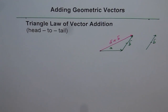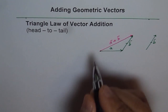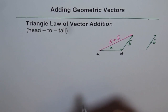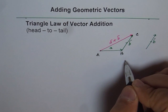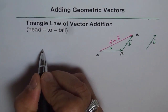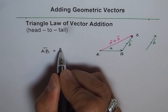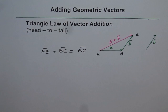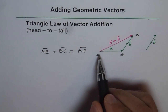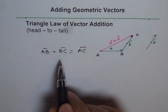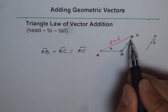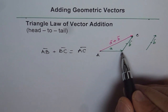Let me show you in another way. Let's say we have two vectors, and vector A goes from A to B. Then calling the third point C, from vector addition: AB plus BC equals AC. So this is another way of stating the triangle law of vector addition — if vectors are given tail to head, you can arrange them so the tail of the next comes over the head, forming a triangle. The third side of the triangle gives you the vector addition.